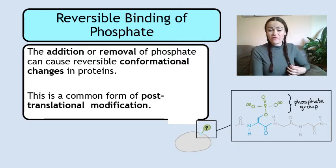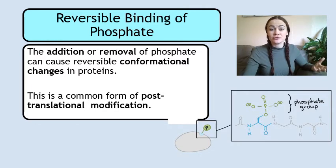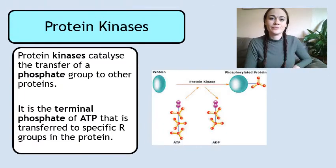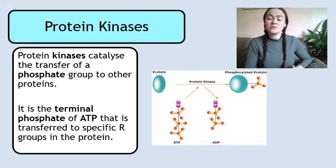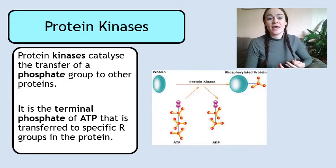By adding or removing a phosphate from a protein, it changes how the R groups of the amino acids in that protein interact, because we're actually going to increase or reduce the negativity of the protein. We'll look at one group of enzymes called protein kinases. Protein kinases catalyze the transfer of a phosphate group to other proteins.